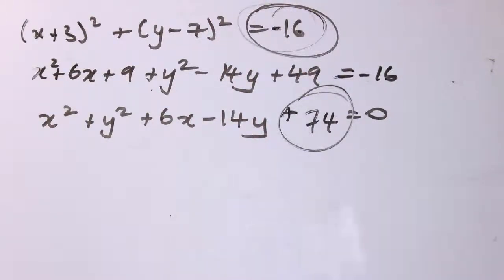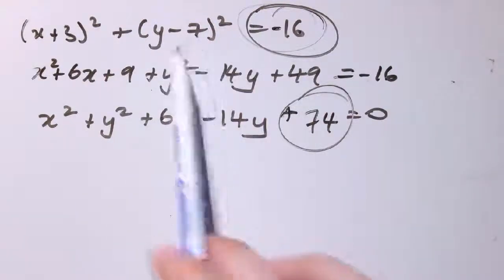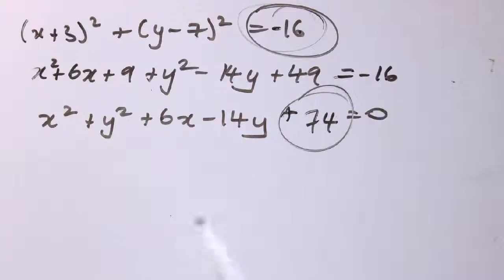So the question arises, well, how would we check if we didn't already know this form? And the answer is that we'll complete the square in x and complete the square in y and then try and rearrange back into this form. And I'll do that in the next video.